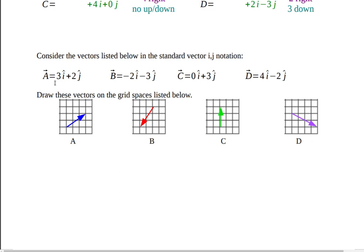So in this case, we had three i hat plus two j hat. That means it should have gone three boxes to the right, one, two, three, and two boxes up, one, two. So this one is shown with three i and two j.